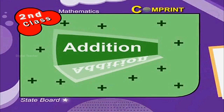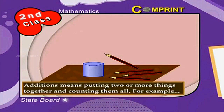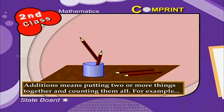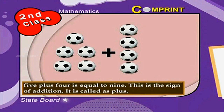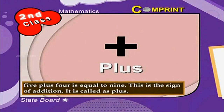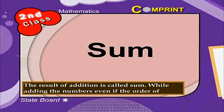Additions. Children, you have learnt additions in your lower class. Additions means putting two or more things together and counting them all. For example, 5 plus 4 is equal to 9. This is the sign of addition, called plus. The result of addition is called sum.